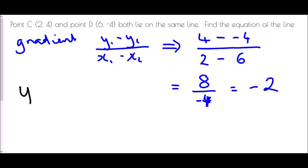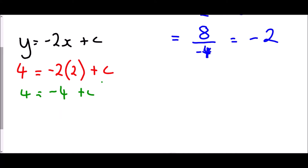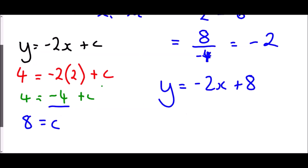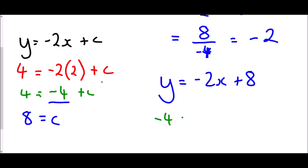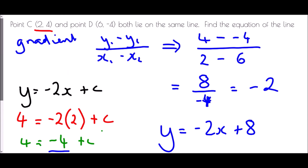The equation of this line is y equals -2x plus c. Using the first point where y is 4 and x is 2: 4 equals -2 times 2 plus c, so 4 equals -4 plus c. Adding 4: c is 8. Therefore y equals -2x plus 8. Checking with (6, -4): -4 equals -2 times 6 plus 8 = -12 plus 8 = -4. They match — the equation works for both points.